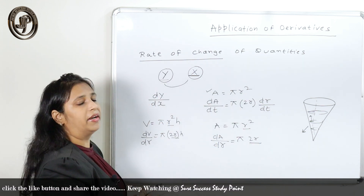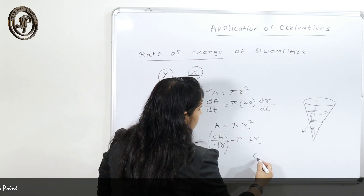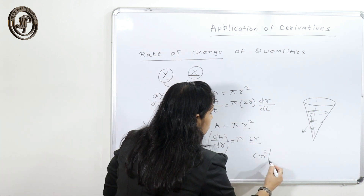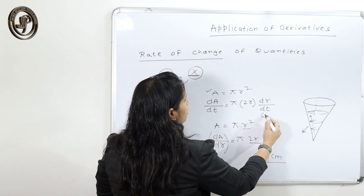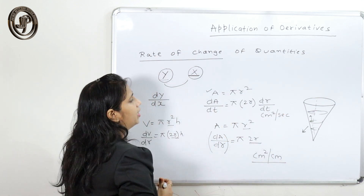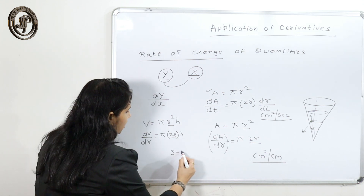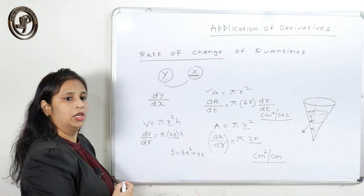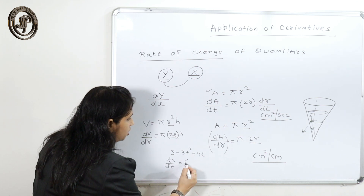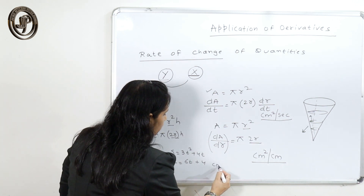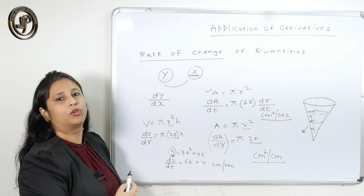The unit for the rate of change is assigned accordingly. For dA/dr, if area is in centimetre square, the unit is centimetre square per centimetre. For dA/dt, if area is in centimetre square and time is in seconds, the unit is centimetre square per second. For example, if s is distance given by s = 3t² + 4t, the rate of change is ds/dt = 6t + 4. If s is in centimetres, the unit is centimetre per second; if in metres and time in minutes, the unit is metre per minute.